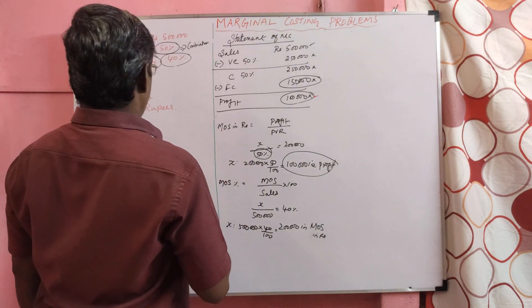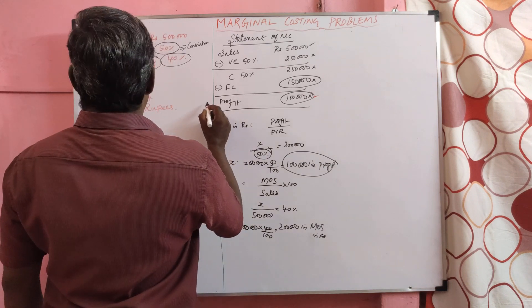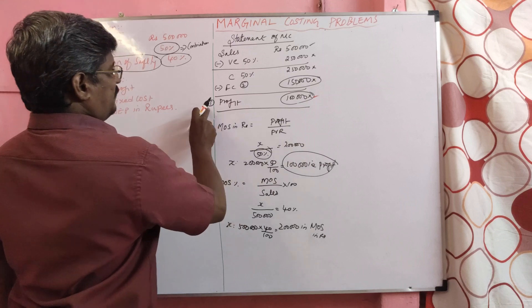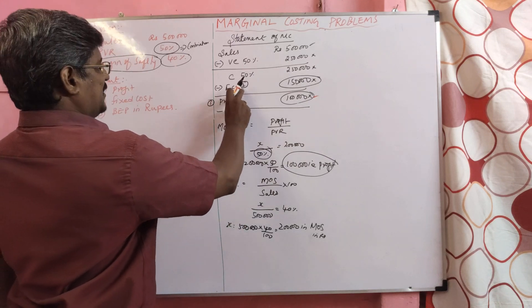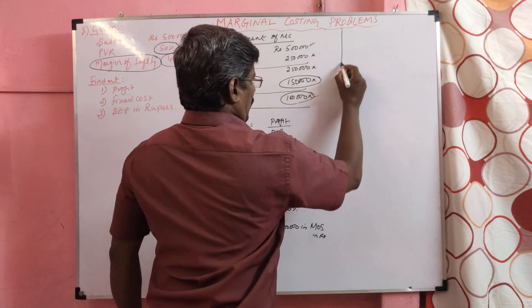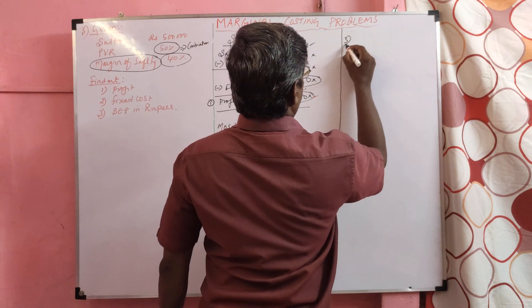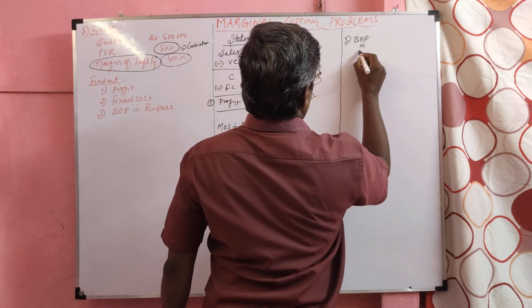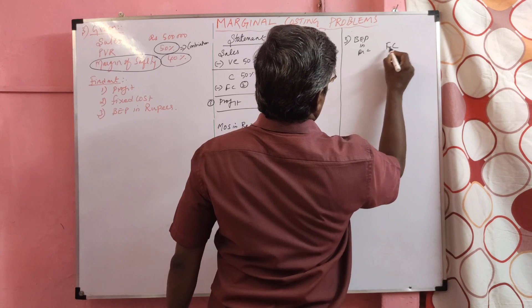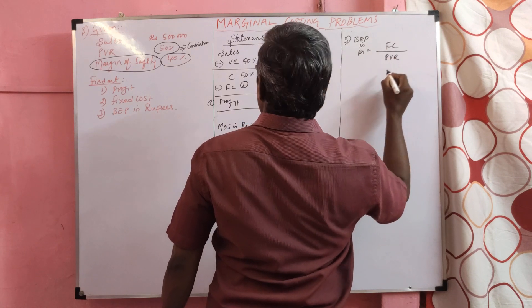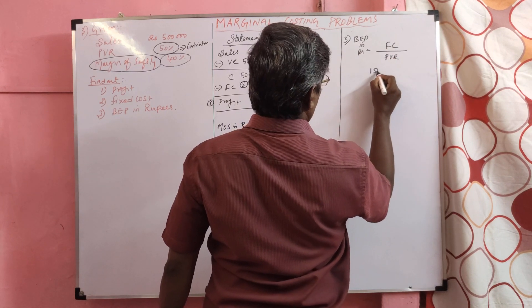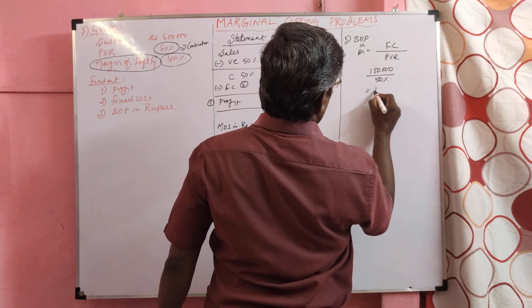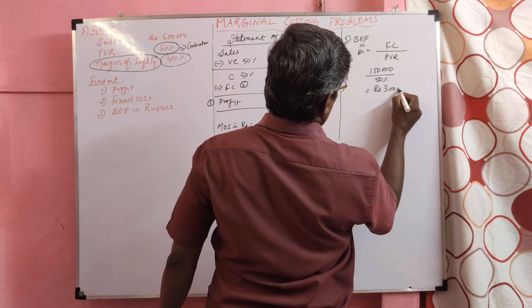Now we can solve the problem easily. Question 1 answer: Profit — 1 lakh. Question 2 answer: Fixed cost — 1 lakh 50,000. Question 3 answer: BEP in rupees = fixed cost divided by PVR = 1 lakh 50,000 divided by 50% = rupees 3 lakh.